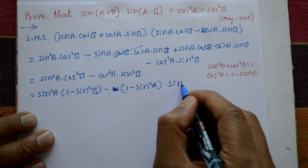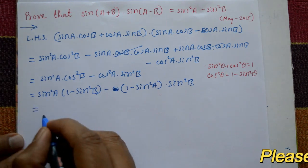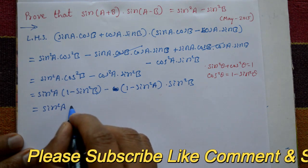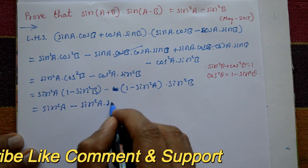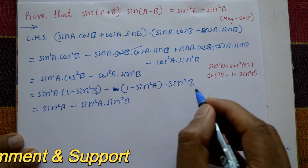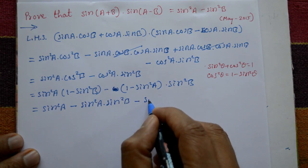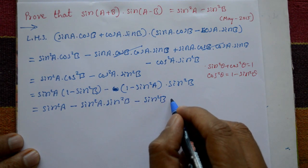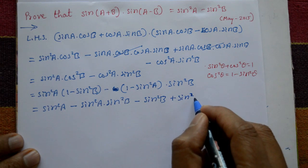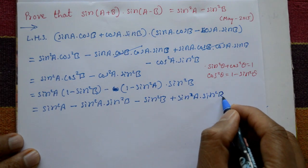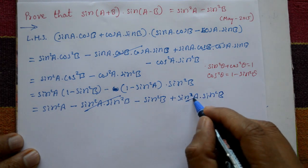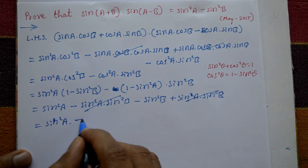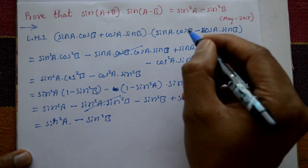Expanding: sin²a·(1 - sin²b) minus (1 - sin²a)·sin²b. This gives sin²a - sin²a·sin²b minus sin²b plus sin²a·sin²b. The terms sin²a·sin²b cancel, and we are left with sin²a minus sin²b, which equals the right hand side.